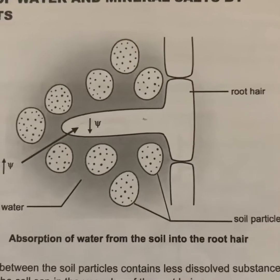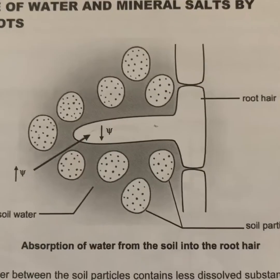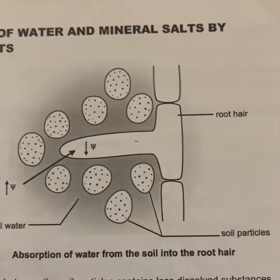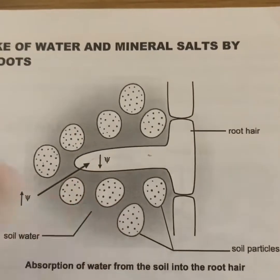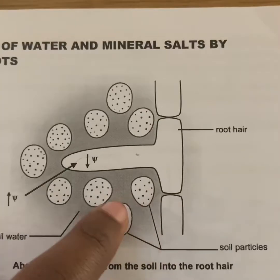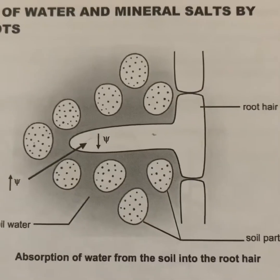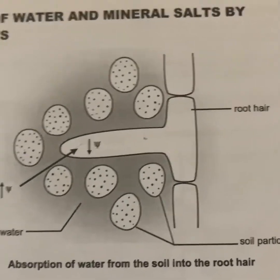Water absorption is facilitated by root hairs. A plant will have a lot of little root hairs that absorb water. Now we're going to look at the diagram showing the absorption of water from the soil into the root hair. The gray area represents the soil water, and these represent the soil particles, and as labeled there is the root hair.